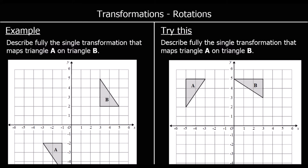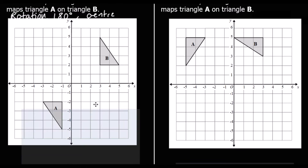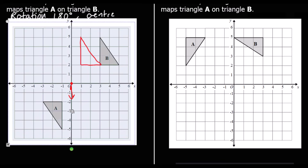And another question: describe fully the single transformation that maps triangle A onto triangle B. Triangle A is down here. Again, it's going to be a rotation, and this is a 180-degree rotation. So it's rotation, 180 degrees — we don't have to say clockwise or anticlockwise because it would be the same both ways around. We just need to know the centre, so where do we hold the tracing paper? Let's try it at the origin. I'll draw around shape A. If I rotate this 180 degrees, will it go onto shape B? No, it won't. So the tracing paper is being held in the wrong place.